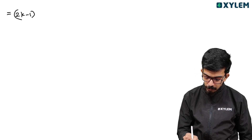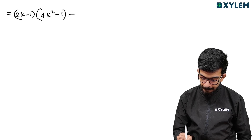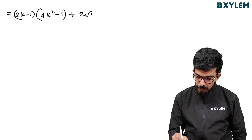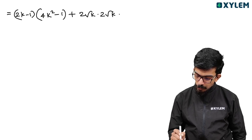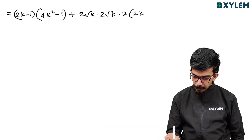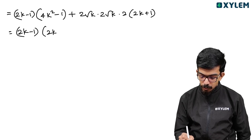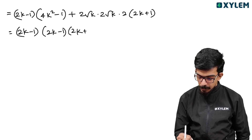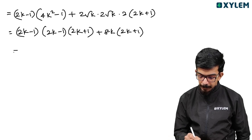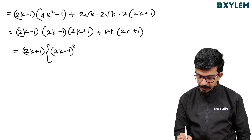Expanding further: 2k minus 1 into 4k squared minus 1, plus 2 root k into 2 root k into 1 plus 2k, which gives 2 root k into 2k plus 1. Combined: 2k minus 1 into 4k squared minus 1 into 2k plus 1, plus 8k into 2k plus 1. This simplifies to 2k plus 1 times the quantity 2k minus 1 whole squared plus 8k.